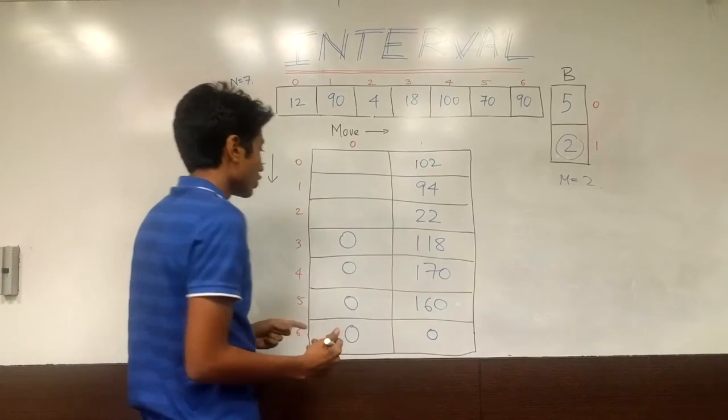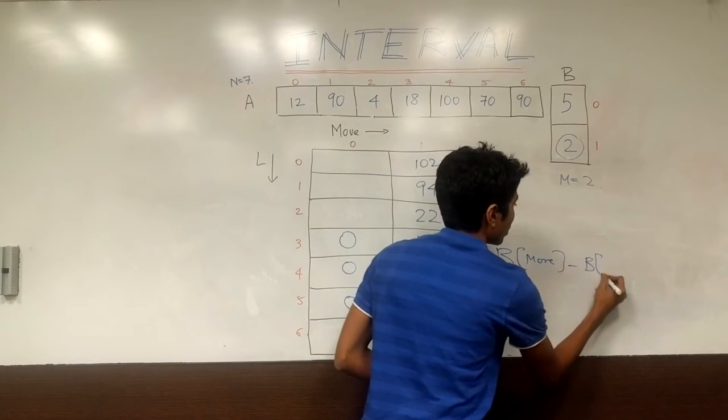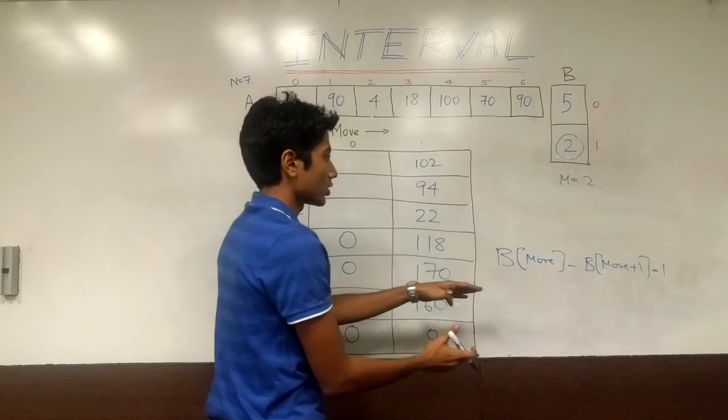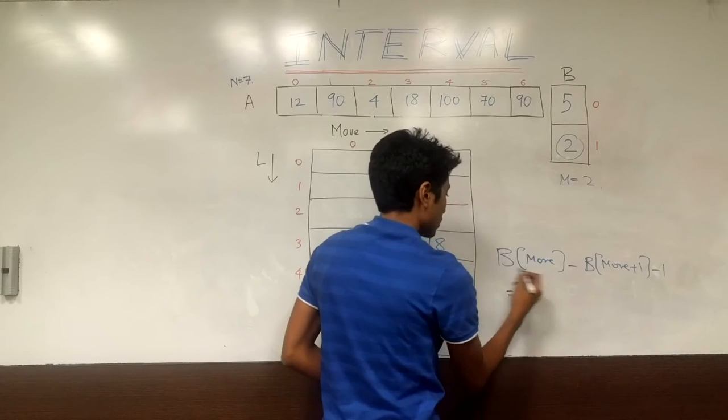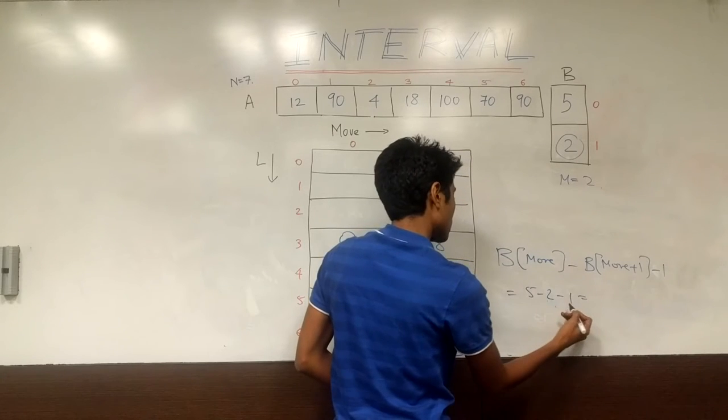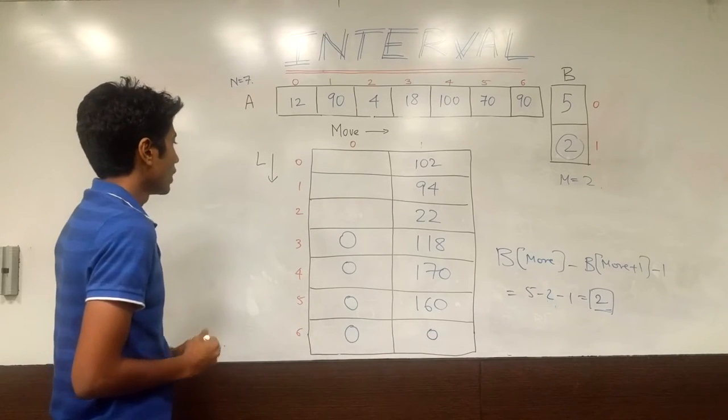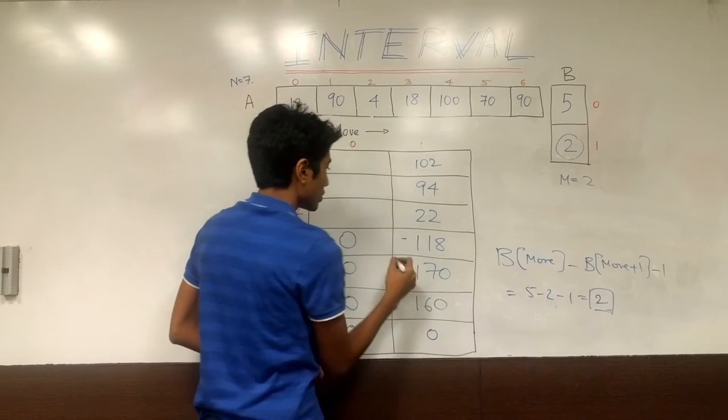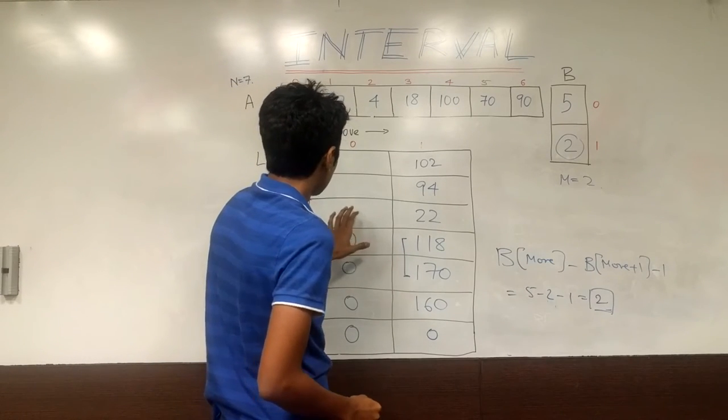Finally we can calculate this value. So the sliding window size in this is b of move minus b of the next move minus 1. Because you are crunching the array from both sides. So it's minus 1. And so that comes out to be 5 minus 2 minus 1 which is 2. So this is your sliding window size. Alright. You come here. Your sliding window starts here. Because it's of size 2 it ends here.